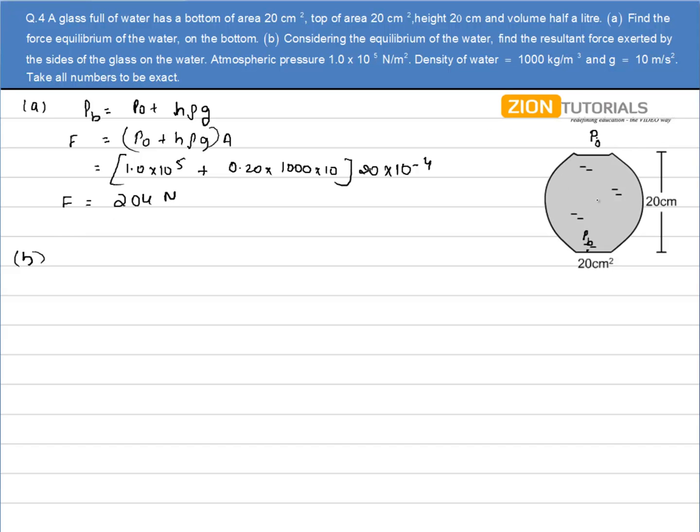Now we know that the mass of the whole body is mg, and it will be acting downward. Now this mg at condition of equilibrium will be balanced by the mass of the whole liquid and the force exerted by the side walls. So I can write mg will be equal to...